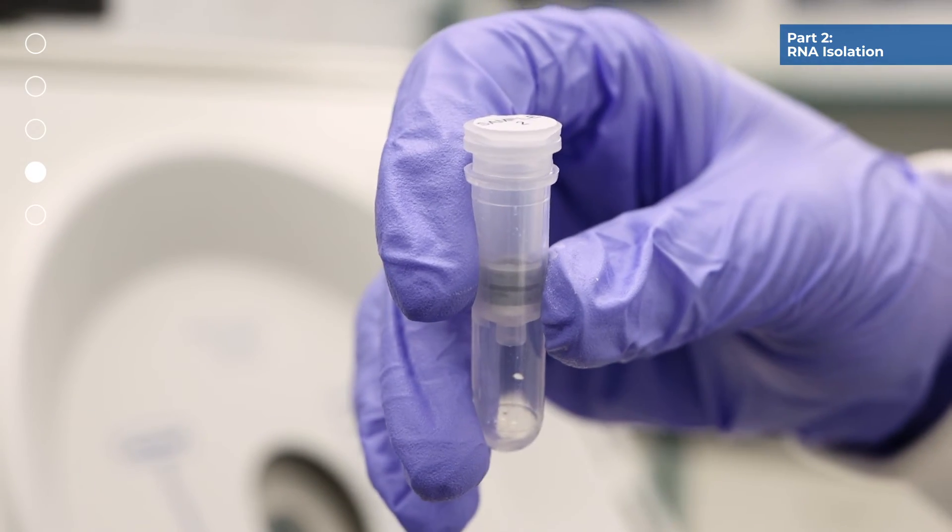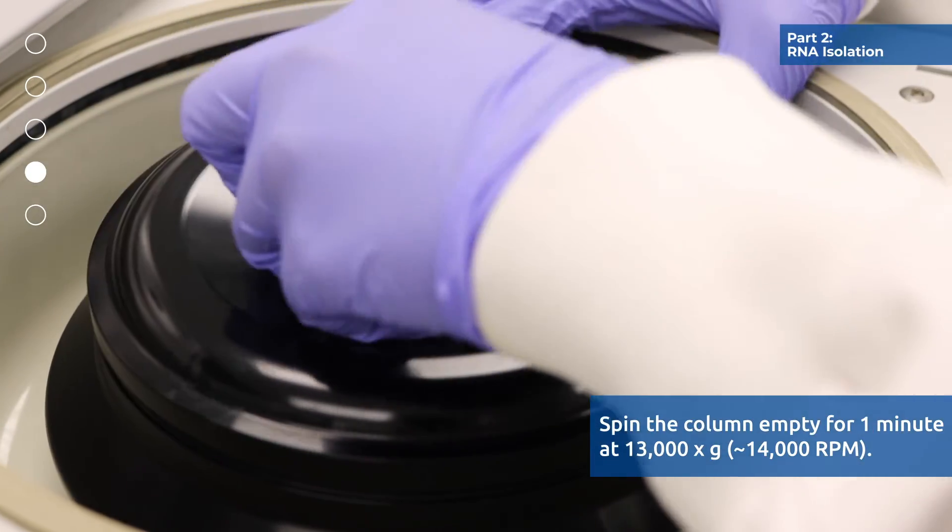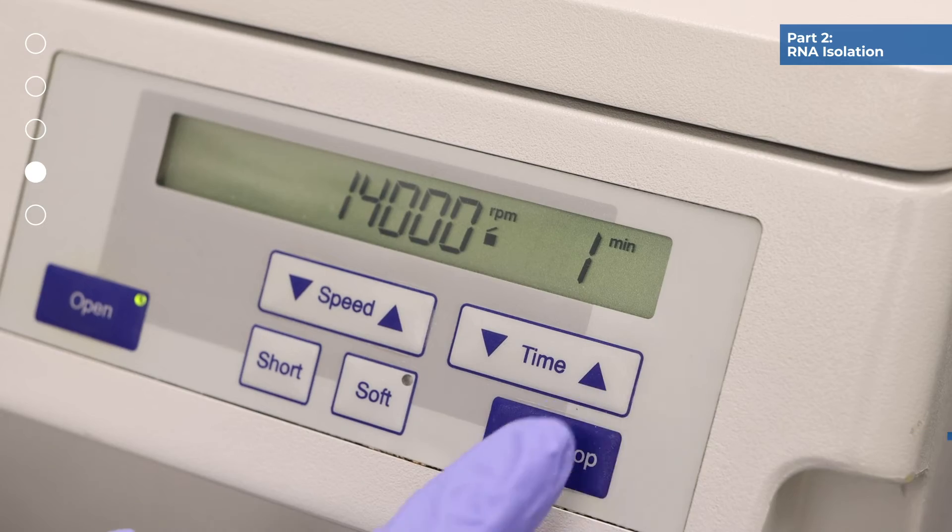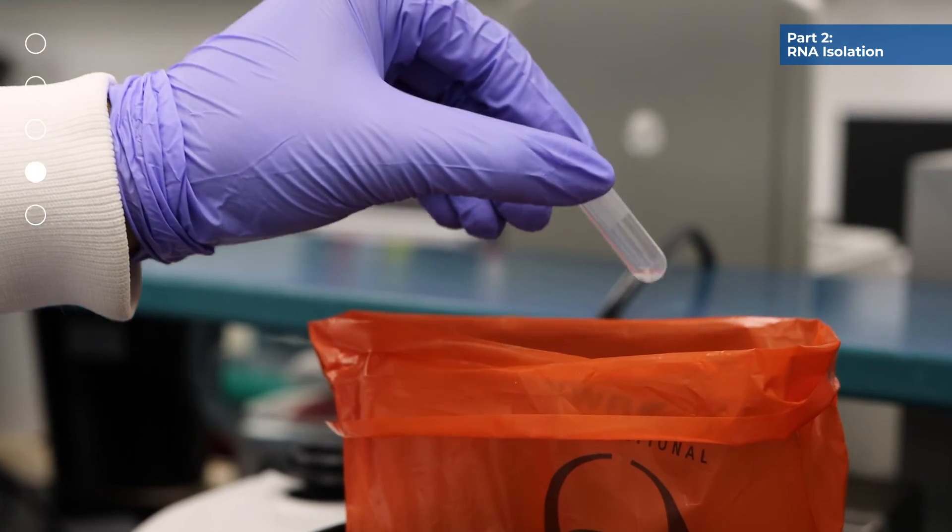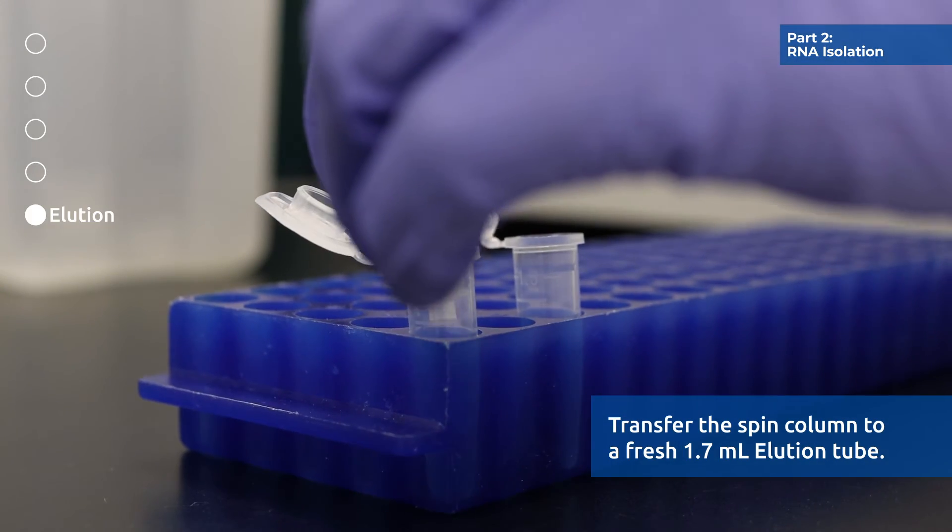Repeat step 6 one more time for a total of 2 washes. Spin the column empty for 1 minute at 13000 g or 14000 rpm. Discard the collection tube. Transfer the spin column to a fresh 1.7 milliliter elution tube.